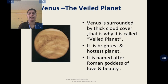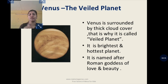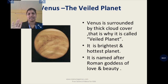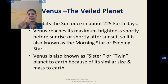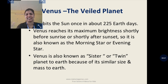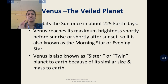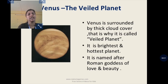The next planet is Venus. Venus is the sixth largest planet. Venus and Uranus are the two planets that rotate east to west, while all other planets rotate west to east. Venus is also called the morning and evening star, and it is called Earth's twin because it looks similar to Earth.